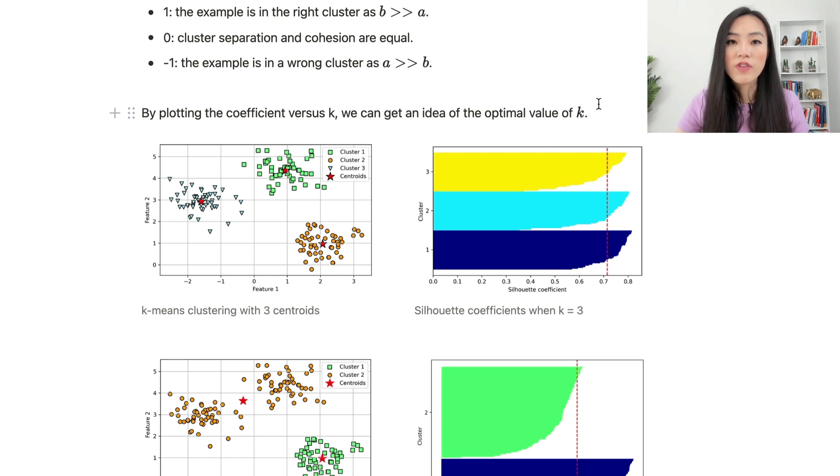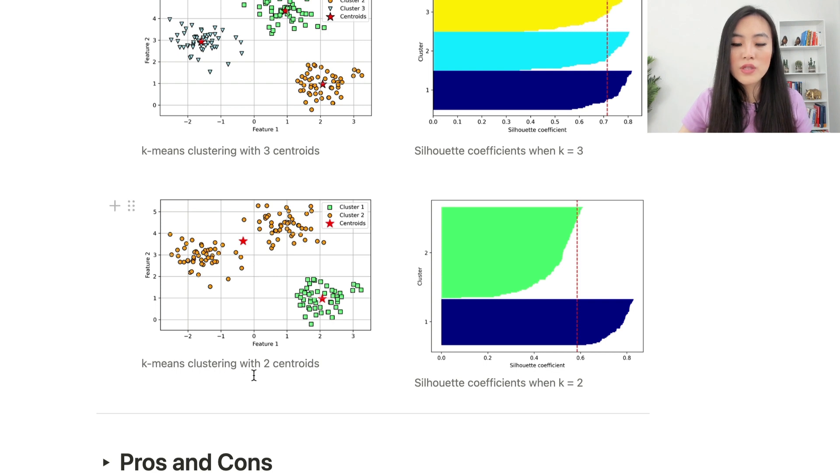By plotting the silhouette coefficient versus K, we can get an idea of the optimal value of K. Here's an example using K-means clustering with three centroids for a particular dataset, and we can plot the silhouette coefficients when K equals 3. In this case, all three clusters have coefficients larger than 0.7.